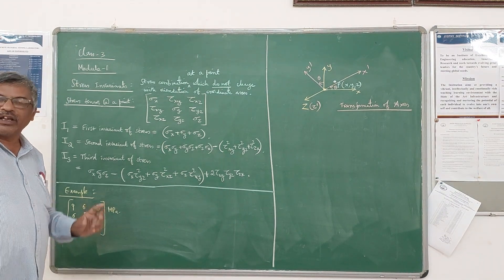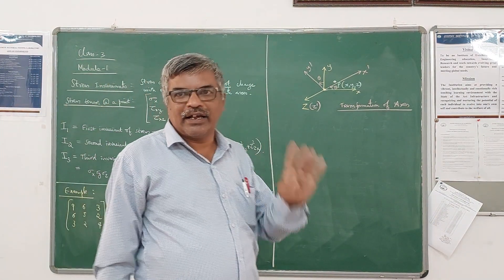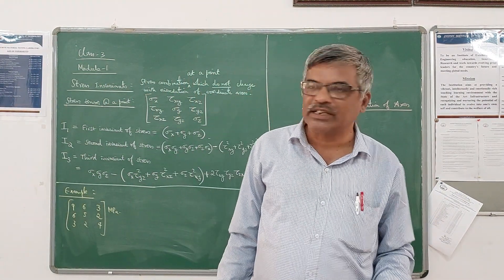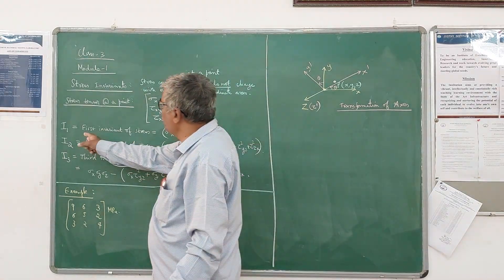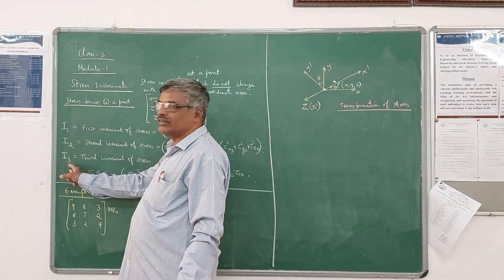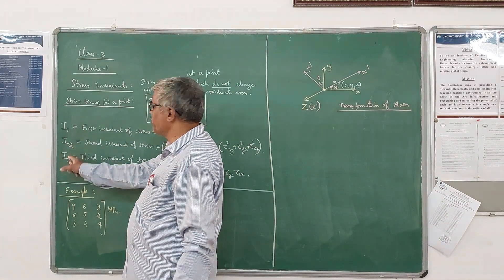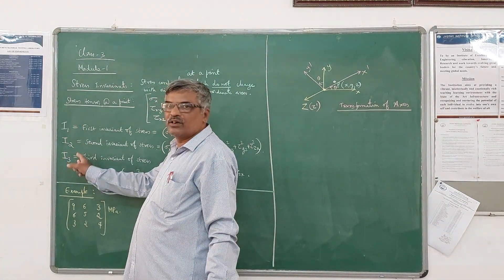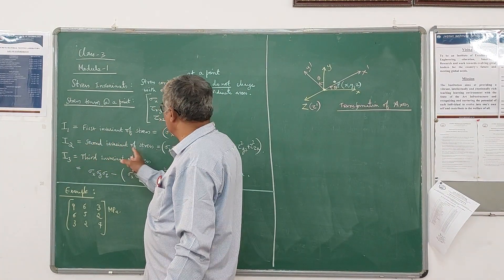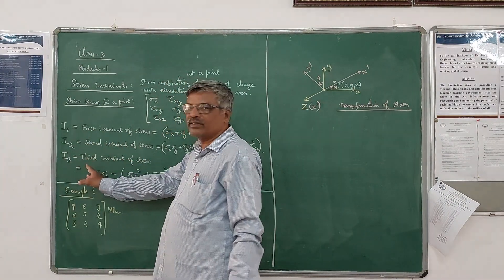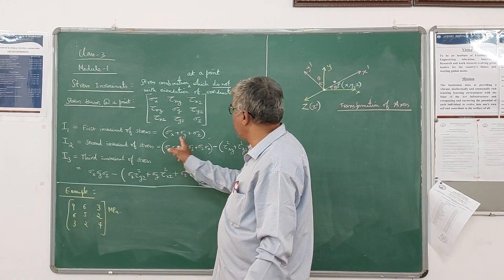We can find out three stress invariants: I1, I2, and I3. We can find out these three stress invariants for one axis — the first stress invariant, the second stress invariant, and the third stress invariant — using this form.